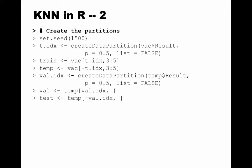We want to create 50 percent of the rows in the training partition, and then 25 percent each in the validation and test partitions. This is a small dataset so we don't have too many rows. We call createDataPartition on vac$result — when using this function you must indicate your target variable so rows get distributed evenly by class. We set p=0.5 and list=FALSE to get a vector. The training partition is then vac[t.idx, 3:5].